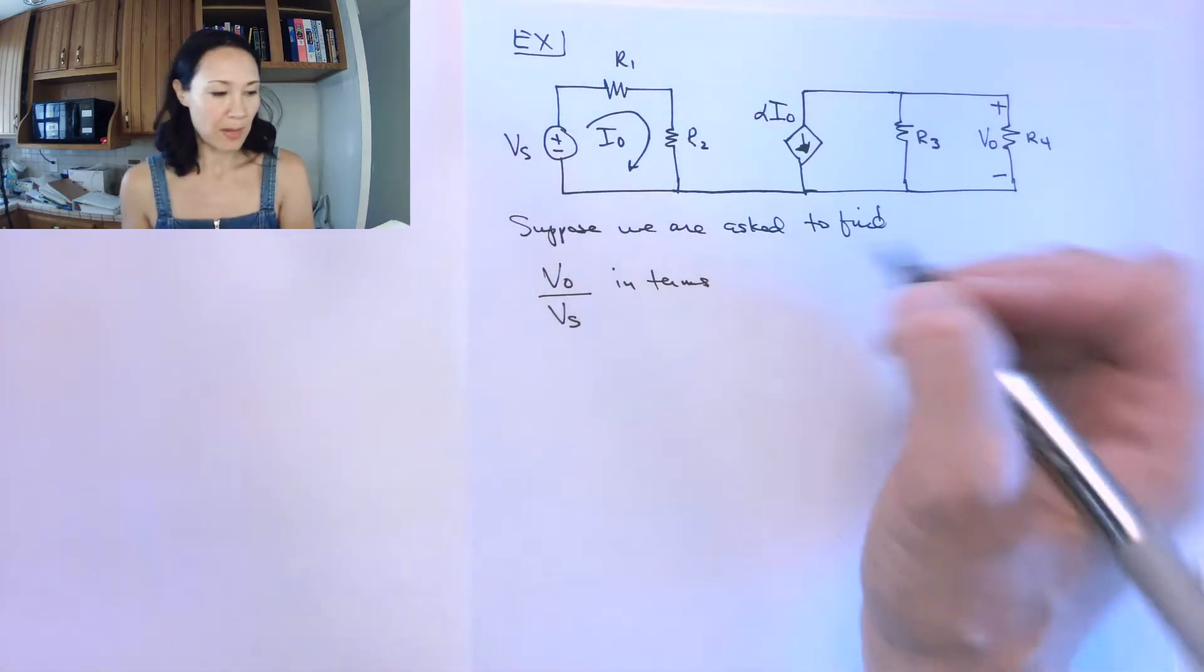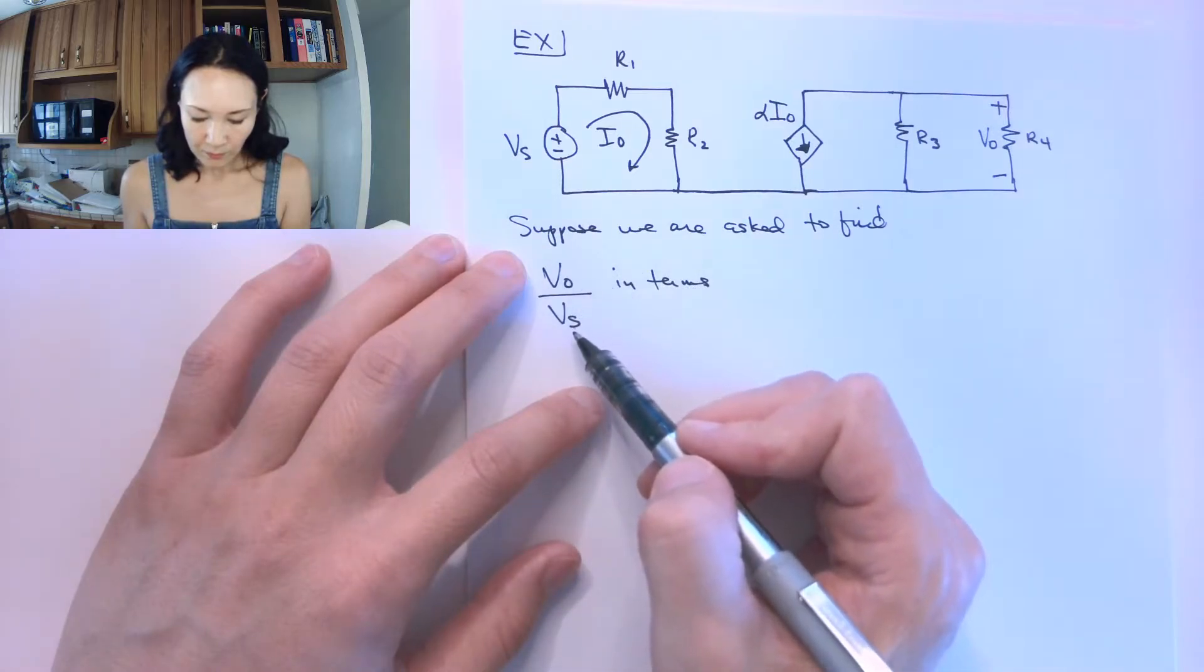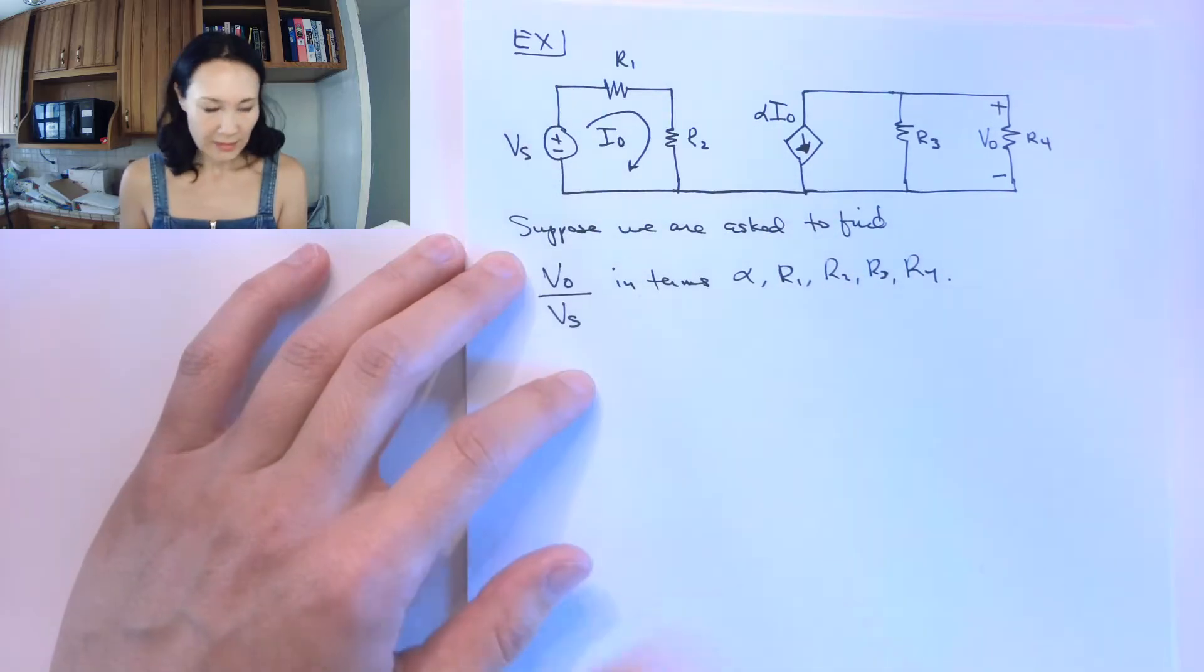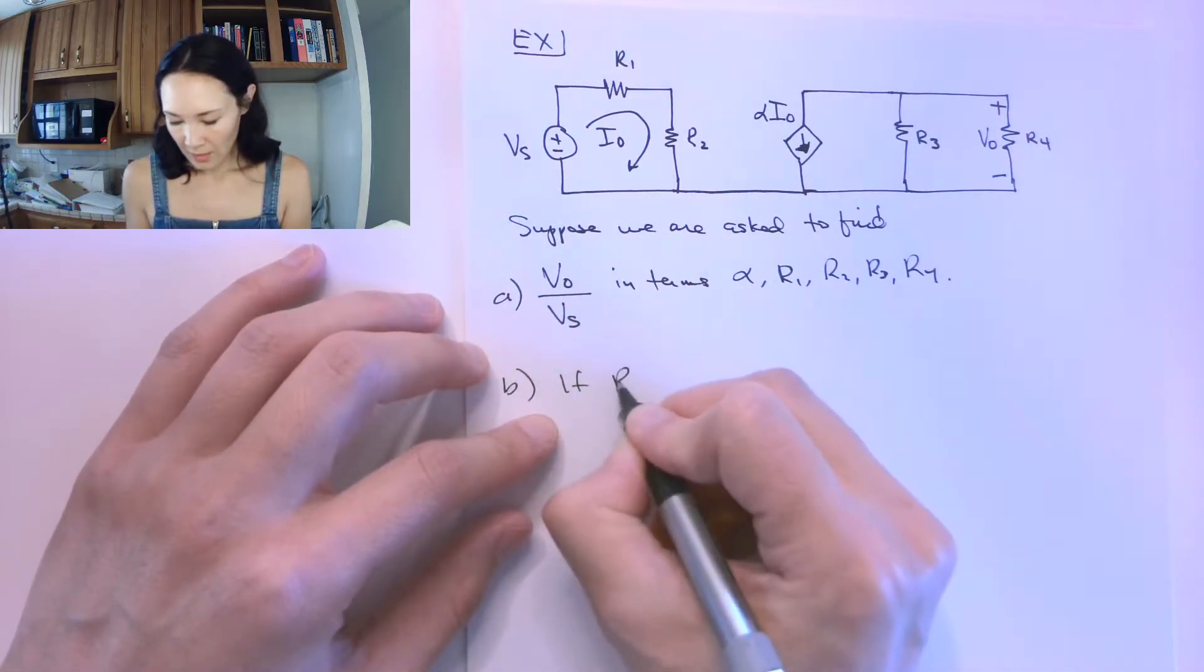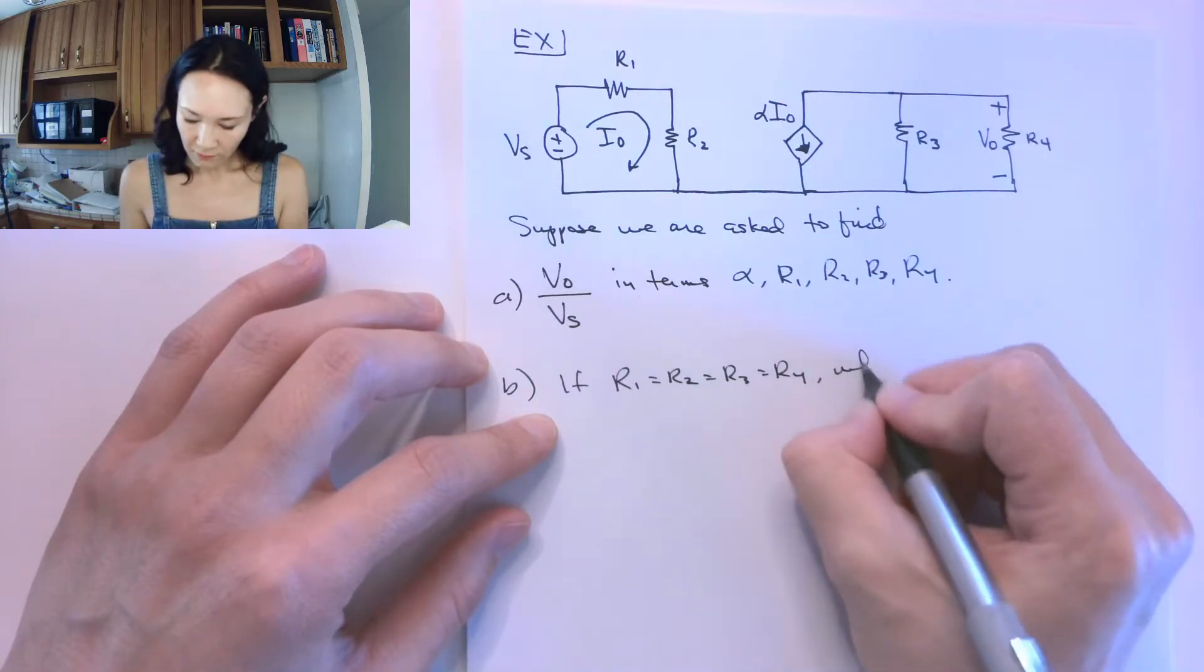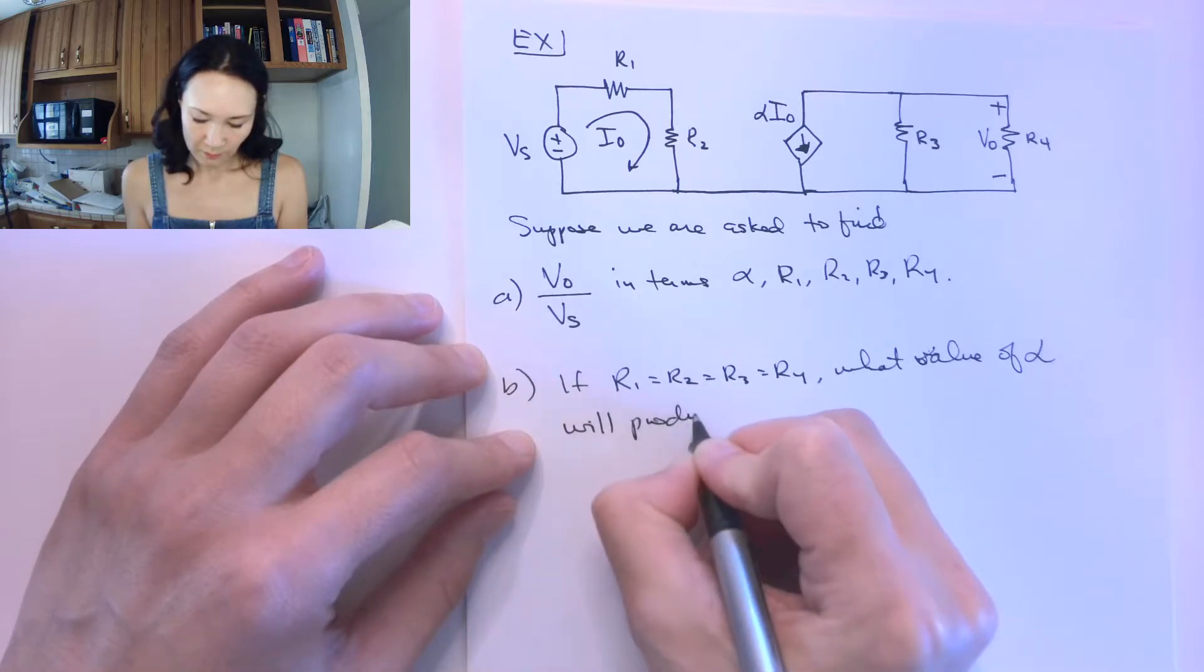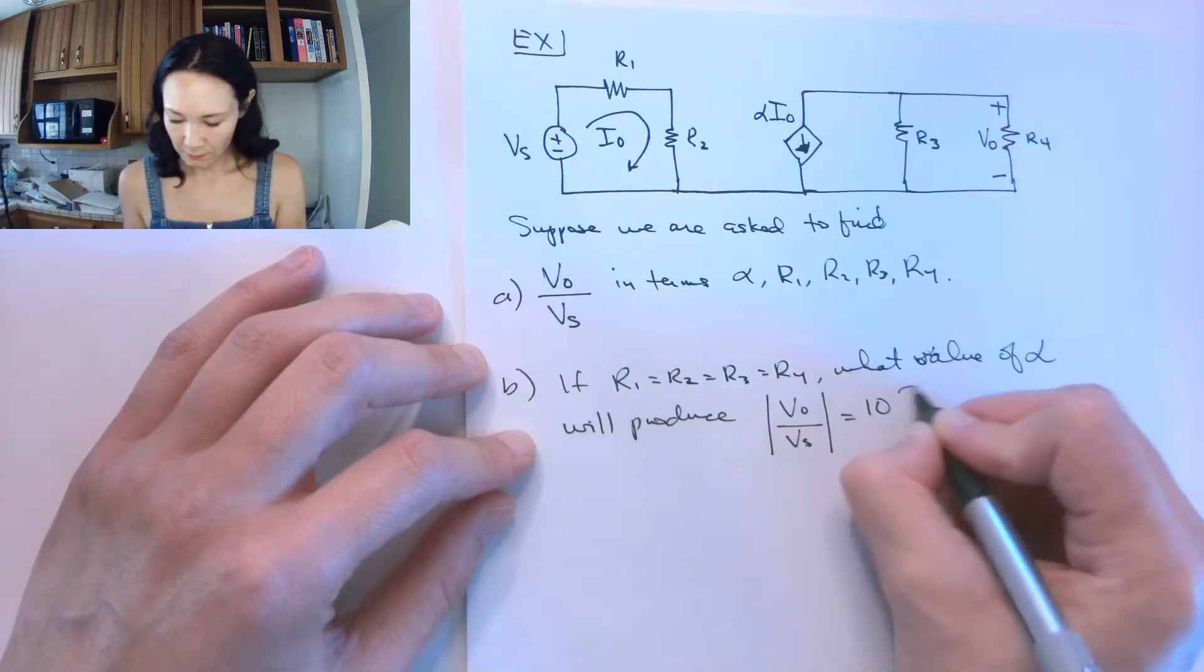But more on that later—let's just talk about how we handle these dependent sources when we're doing our series parallel circuit analysis. In this problem, we want to find V0 divided by Vs in terms of alpha, R1, R2, R3, and R4. And then the second part is, if all these resistors are equal, then what value of alpha will produce a Vout to Vs ratio of 10?